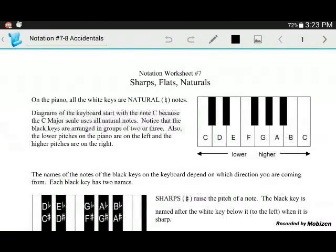On the piano, all the white keys are natural notes. When you see a diagram of a keyboard like this one here, they always start with the note C. This is because the C major scale is the only scale that uses all the white keys. Let me play the C major scale for you, and I'll be using all the white keys on the piano, starting with C.